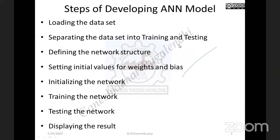The two stages are: separating the data into training and testing. You have to divide the data accordingly, then define the network structure. These two components — separating the dataset into training and testing and defining the network structure — were discussed in the design issues of the BPN model in the morning session. After that, you initialize weights and bias, then initialize the network, then train the network, then test it, and finally display the results.